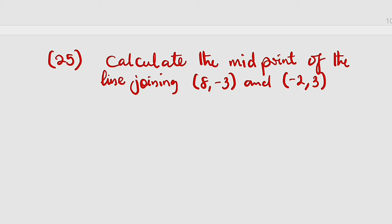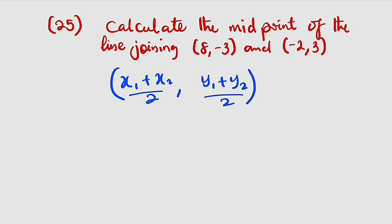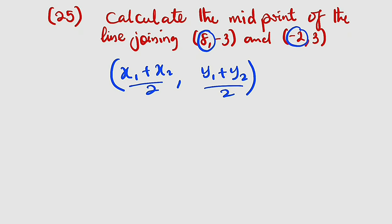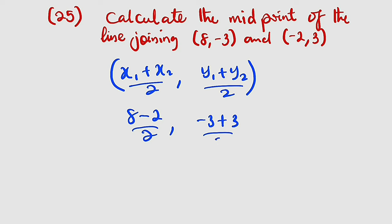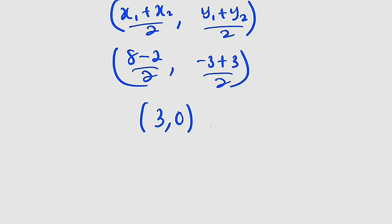Question number 25: calculate the midpoint of the line joining (8, −3) and (−2, 3). The midpoint formula is ((x1 + x2)/2, (y1 + y2)/2). Adding x-values: 8 plus negative 2 = 6, divided by 2 = 3. Adding y-values: negative 3 plus 3 = 0, divided by 2 = 0. The midpoint is (3, 0).